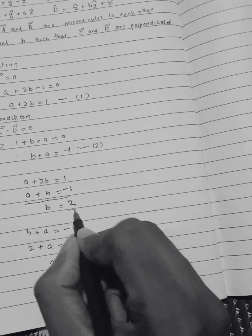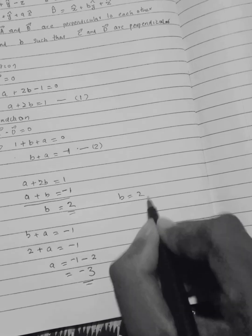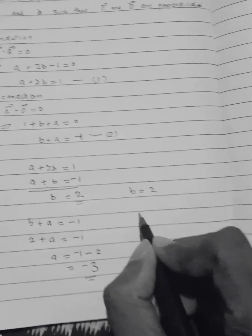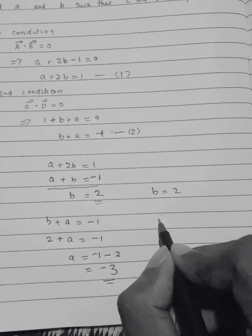So the answer is b equals 2 and a equals minus 3.